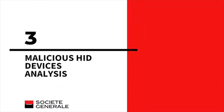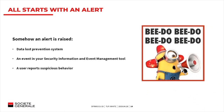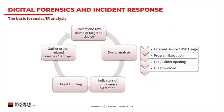Now I'll let Frank talk about forensics of what we've done with the mouse. On the blue team side, when handling an incident related to a malicious HID device, it all starts with an alert — maybe from your DLP system, your event management tool, or a user who spots suspicious behavior on their computer. You start your basic forensics: collect the targeted devices, dump the data, make your timeline, run your tools, extract indicators of compromise, give them to your threat hunting team, hunt on the network for other related devices, and repeat the process.